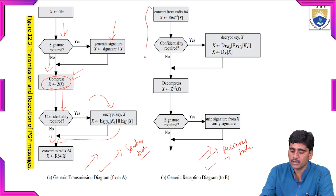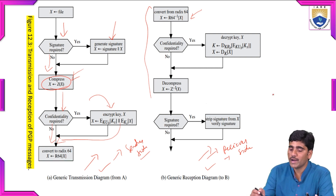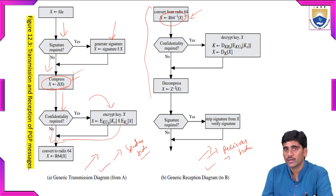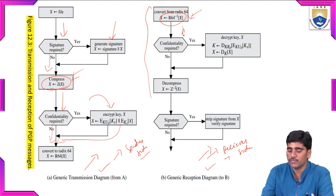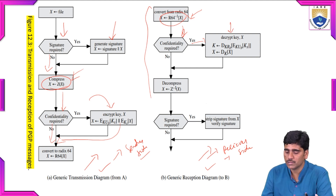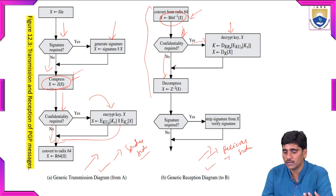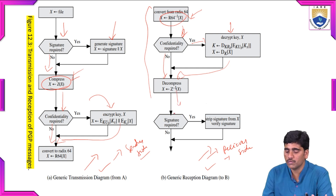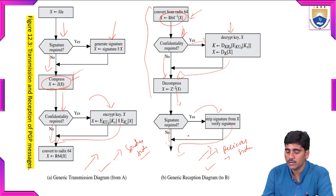At the receiver side, the message is converted from Radix64. If the file requires confidentiality, apply the decryption process; if not, apply directly to decompression. After decompression, check whether it is authenticated. If authenticated, verify the signature. If verified, the message is received by the receiver; if not verified, it is rejected.